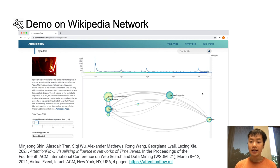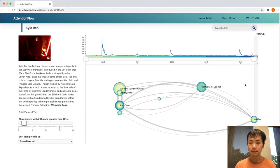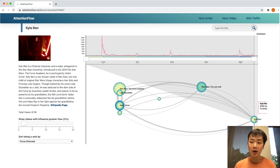Let me now show you a quick demo to visualize the flow of influence in the Wikipedia Network of Time series. This work is published separately as a demo paper in Wisdom 2021. Here, we can see the ego network around the Wikipedia page for Kylo Ren, who is the main character in Star Wars.